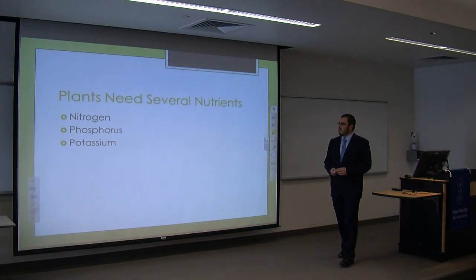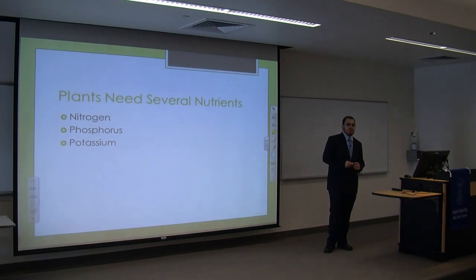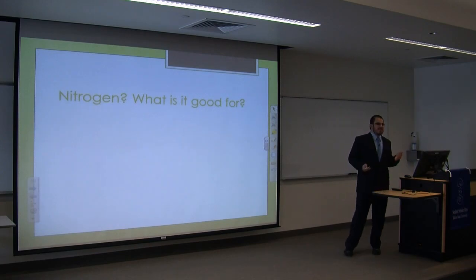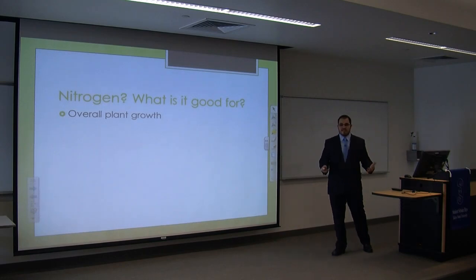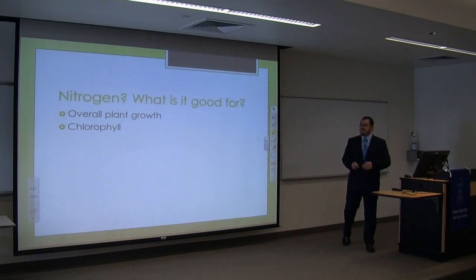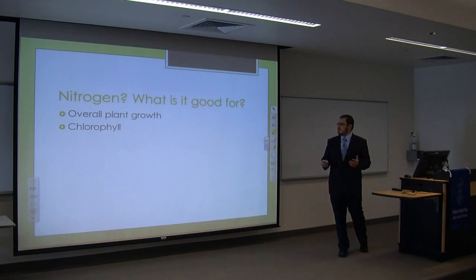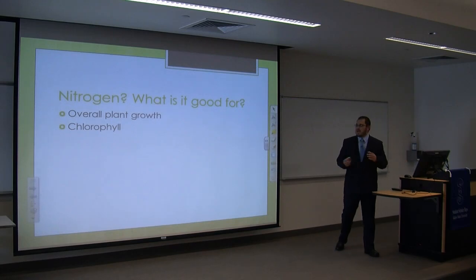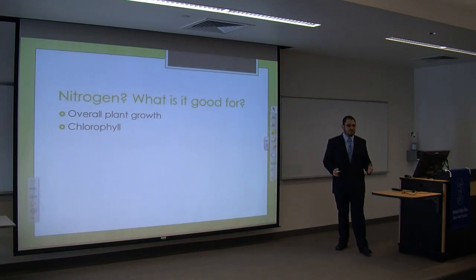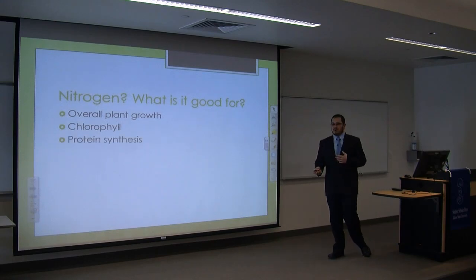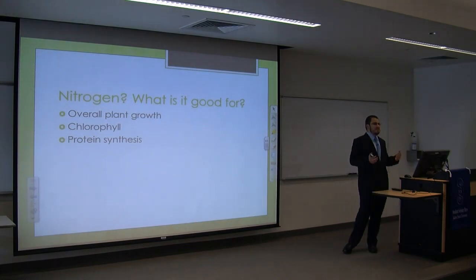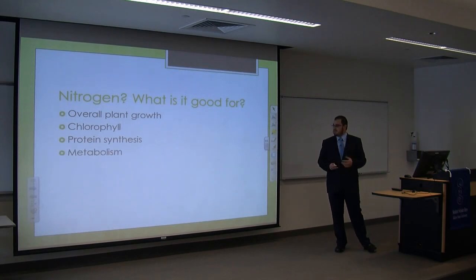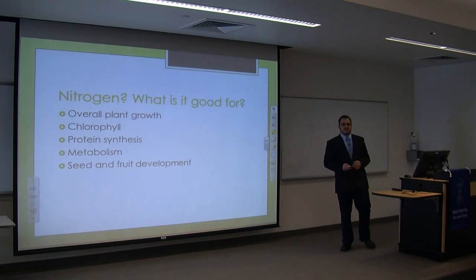Out of the three, the most important is nitrogen — it's always the limiting factor of plant growth. Nitrogen is good for pretty much overall plant growth. It's very important for chlorophyll, which is the organ the plant uses to obtain its energy from sunlight and carry out photosynthesis. Without chlorophyll, the plant won't live. It's important for protein synthesis — proteins are the building blocks of the plant — and also important for metabolism and seed and fruit development.